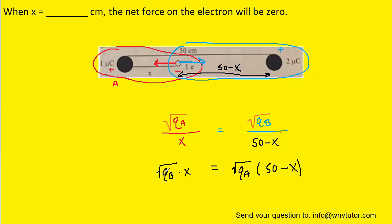If we wish, we can plug in the value for QB, which was 2 microcoulombs, and then QA was 1 microcoulomb. And that's kind of nice, actually, because the square root of 1 is just 1, so we can get rid of this from the equation. And the square root of 2, if you punch that into your calculator, is about 1.414. So we could write this as 1.414x equals 50 minus x.